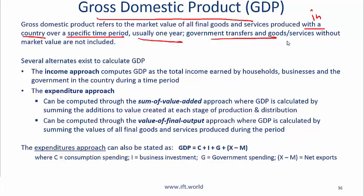Government transfers and goods and services without market value are not included. So if you are doing your own gardening, that does not count as part of GDP. If a government is making transfer payments to its citizens, that also is not included in GDP.